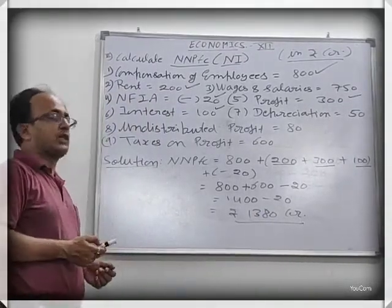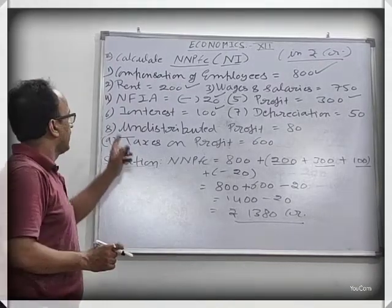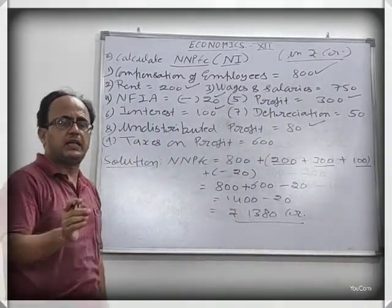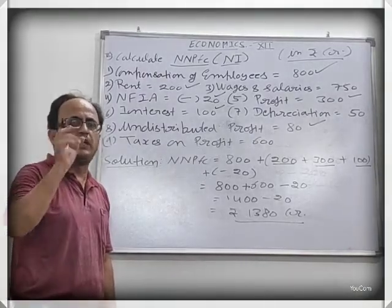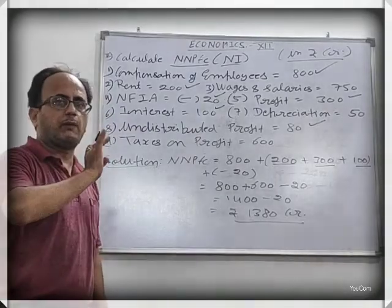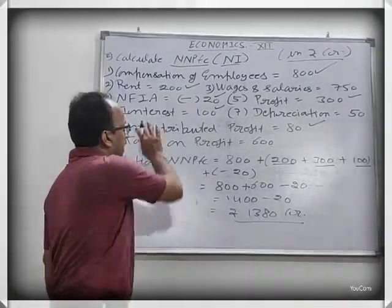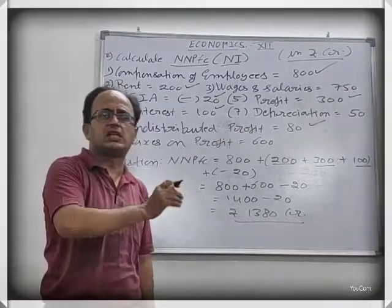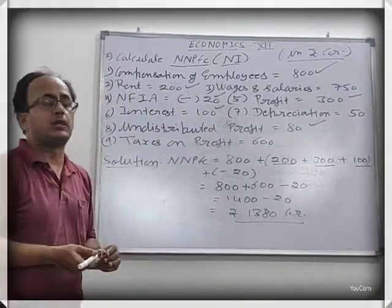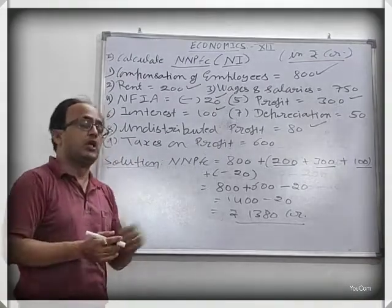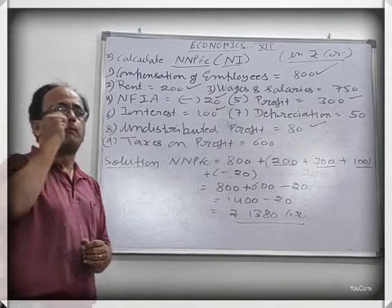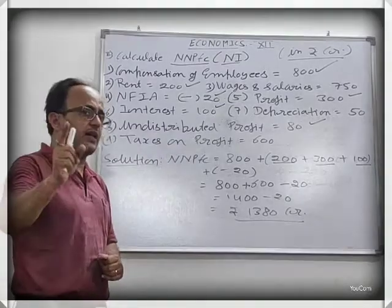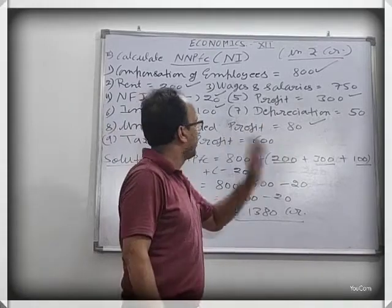Two more things to note in this portion. One is undistributed profit, which is given as 80 — but undistributed profit is already included within profit, so we add profit directly. Second is taxes on profit, which is corporation tax. If profit is given after tax, then we have to add taxes on profit back. If profit already includes tax, then we add tax and profit together.